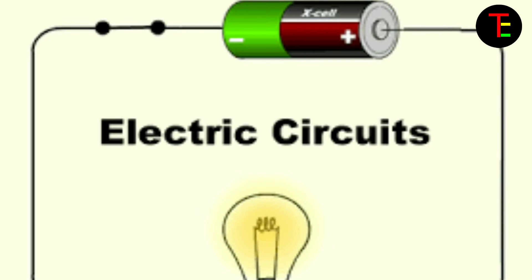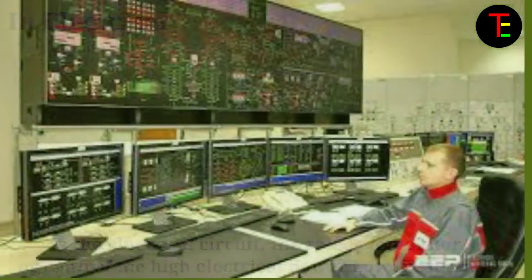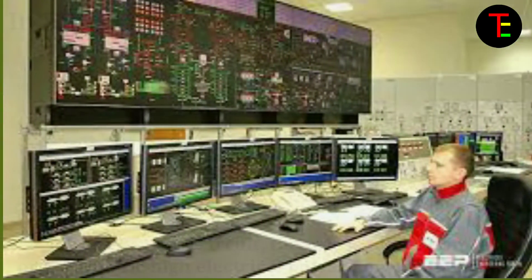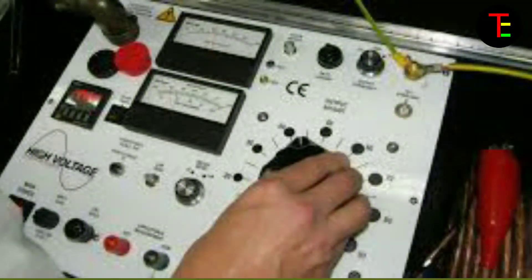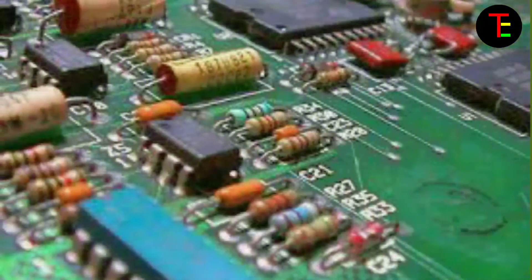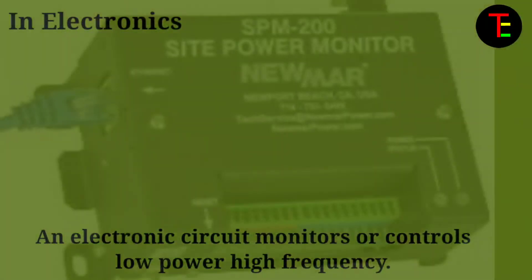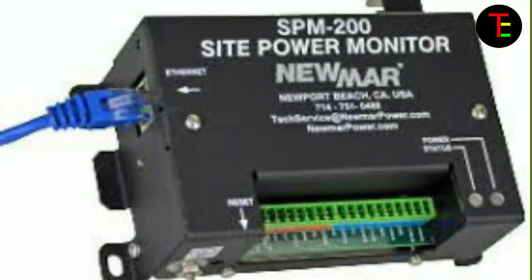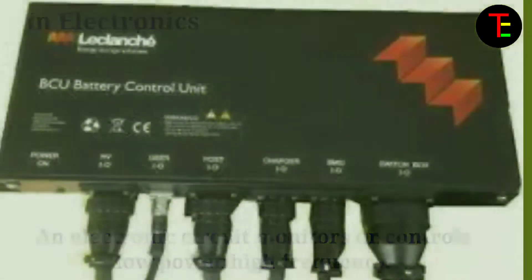No.8 Electrical power: In the electrical circuit, the role is to monitor or control high electrical power at low frequency. But an electronic circuit monitors or controls low power at high frequency.